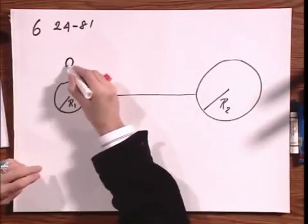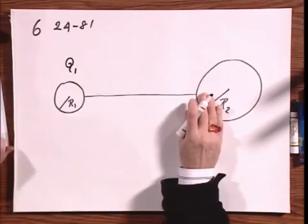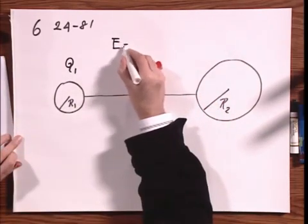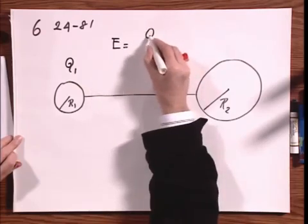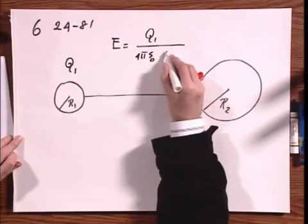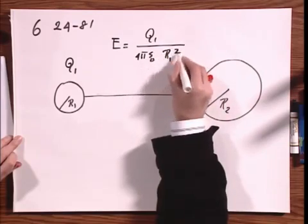We first put on here a charge Q1 and then it's not connected. And so the electric field at the surface, if you're interested, then would be Q1 divided by 4 pi epsilon zero times R1 squared.